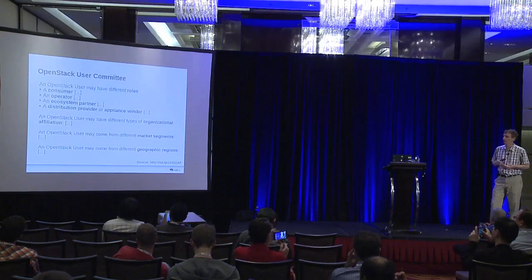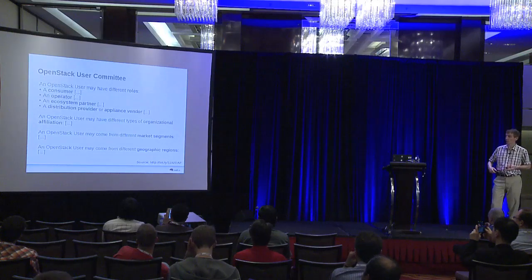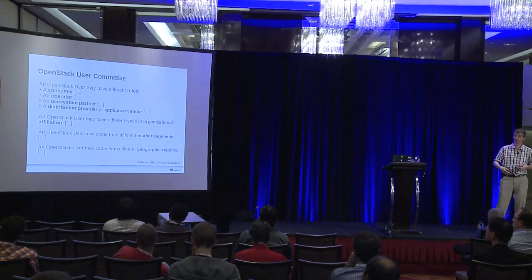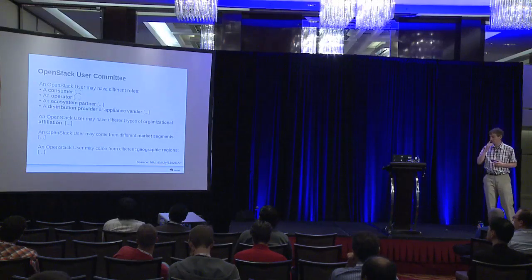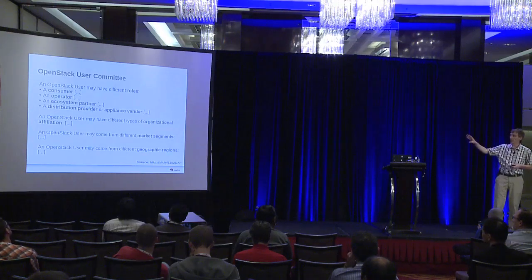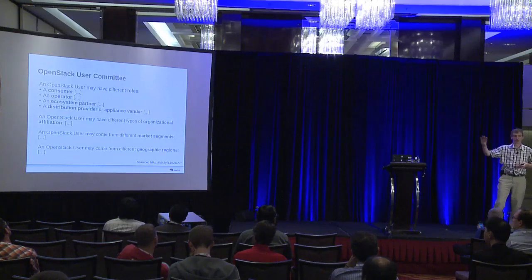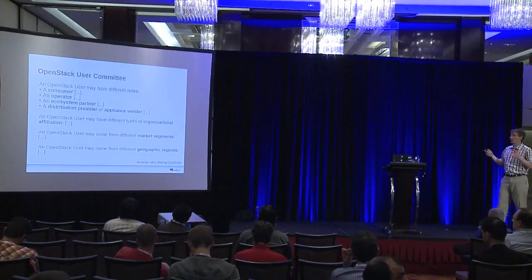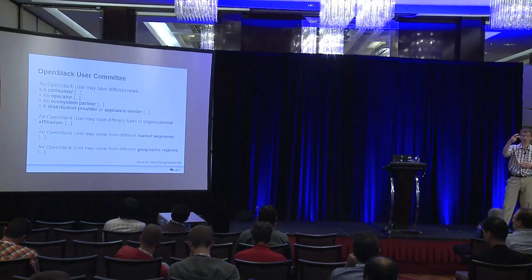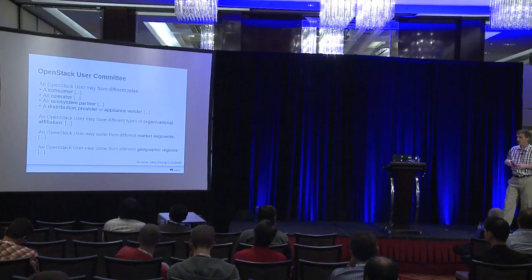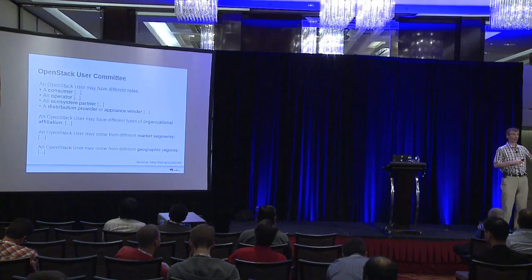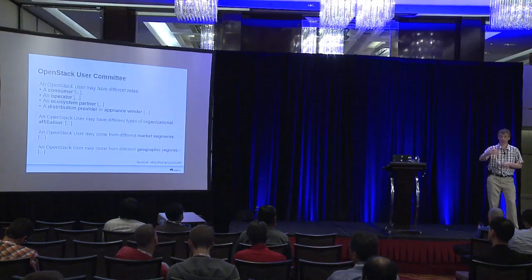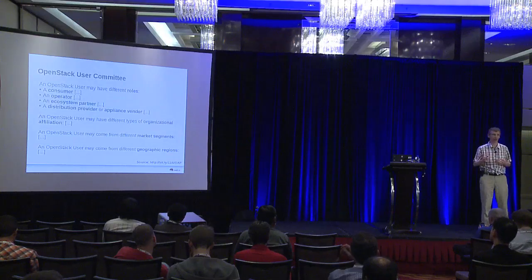The OpenStack user committee definition says a user may have different roles: consumer, operator, ecosystem partner, distributor, or appliance vendor — and can be in different types of organizations, market segments, and geographical regions. My comment is you could replace this quite easily with 'everyone.' It makes more sense to focus: maybe organizations of a specific size in a specific geographical area are more risk averse and earlier adopters than others.